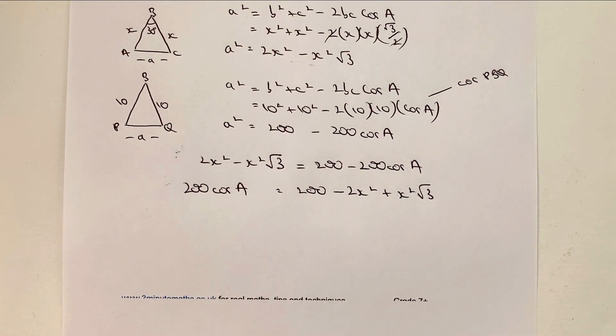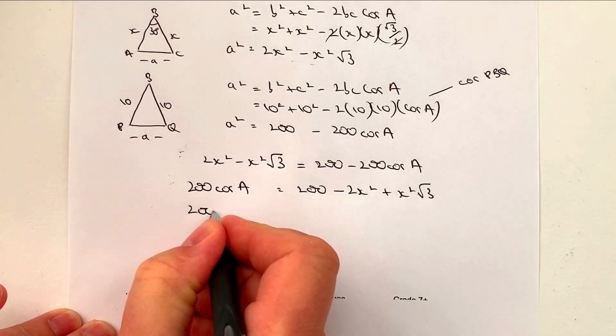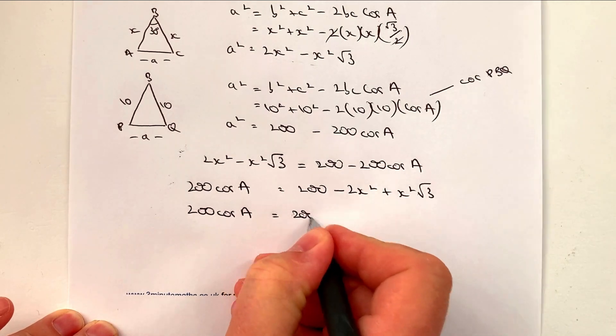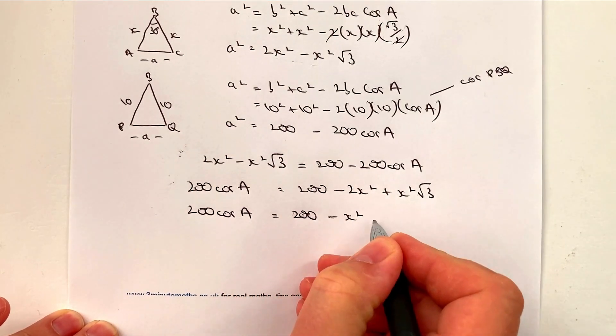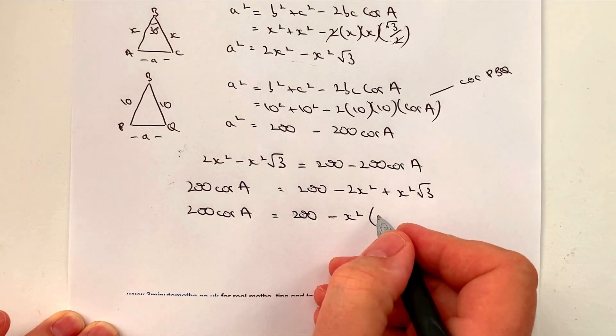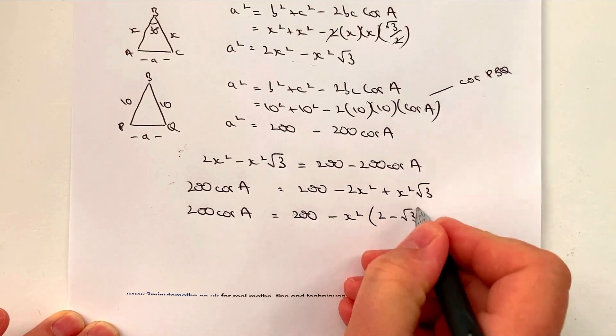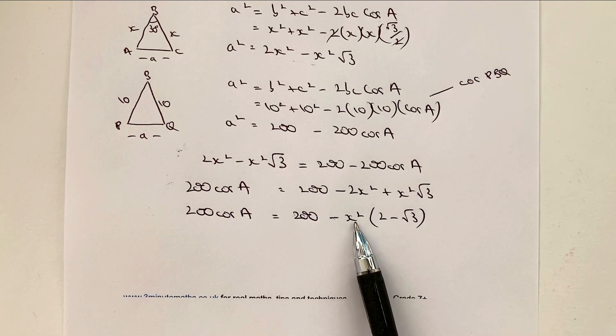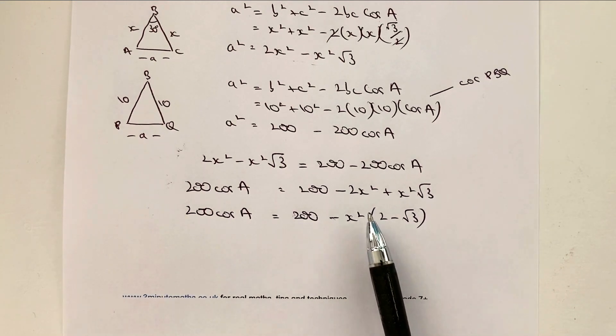So with these sorts of questions, you need to kind of keep referring back to the original question if you can. So let's rewrite this as 200 cosine A equals, and I'm going to write it as 200 minus x squared. And in brackets, I've got 2 minus root 3, because if I take minus x squared and multiply it by 2, I get minus 2x squared.